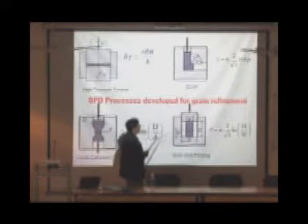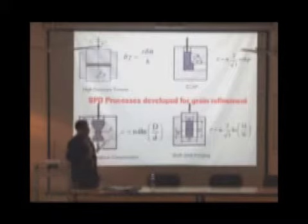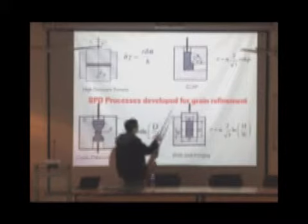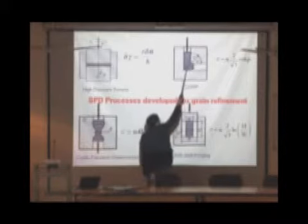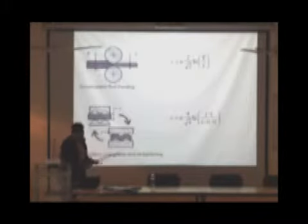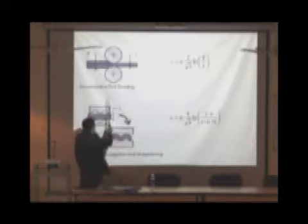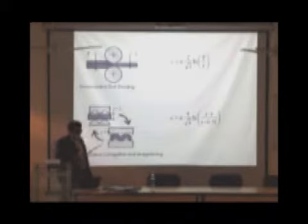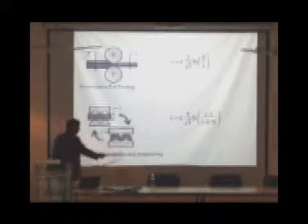These are the formulations that are given for inducing strain. Like in this, strain is given by n times 2 by root 3 of cot phi over 2 plus psi. The main parameter that strain is depending on is this angle. Two more processes are available: ARB process, accumulative roll bonding, and repetitive corrugation and straightening.